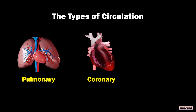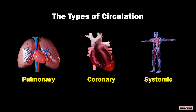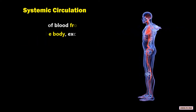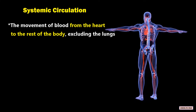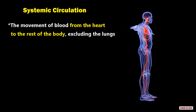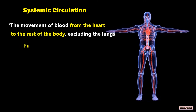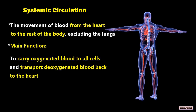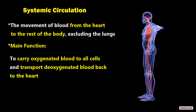The third circulation is systemic circulation, which is the movement of blood from the heart to the rest of the body, excluding the lungs. The main function of this circulation is to carry oxygenated blood to all cells and transport the deoxygenated blood back to the heart.